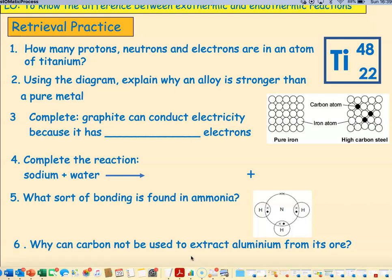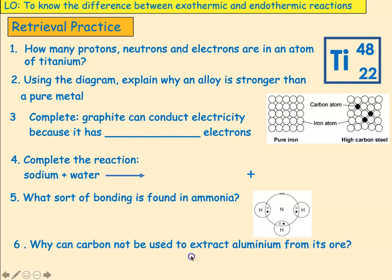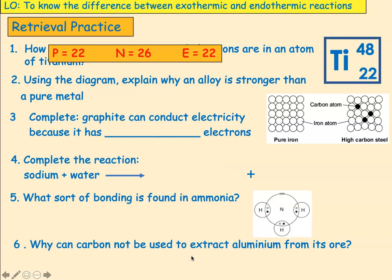Welcome back. First question: how many protons, neutrons, and electrons are in an atom of titanium? We've got the symbol for titanium with its bottom number, which is the atomic number, and the top number, which is the mass number. The bottom number is the number of protons and electrons, and the top number are the number of protons and neutrons in the nucleus. So we have 22 protons, because the atomic number is 22. We have 22 electrons, because they're always equal to the number of protons. And we get the number of neutrons by taking the bottom number away from the top number — so 48 take away 22 gives you 26.